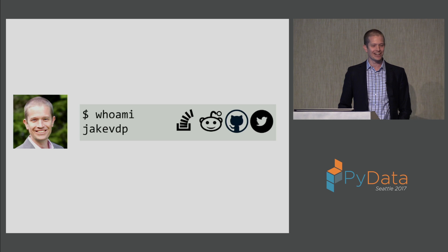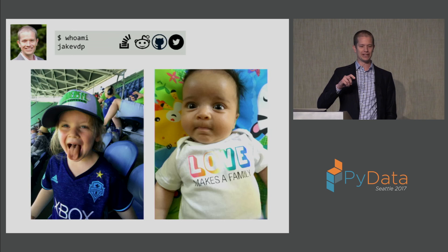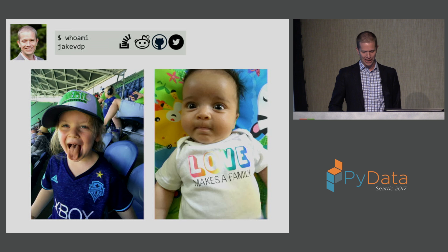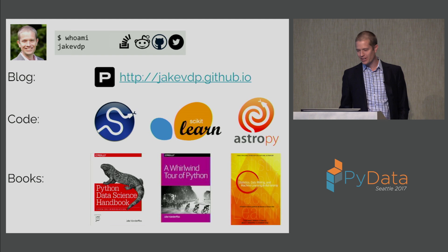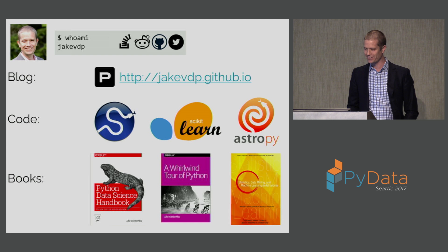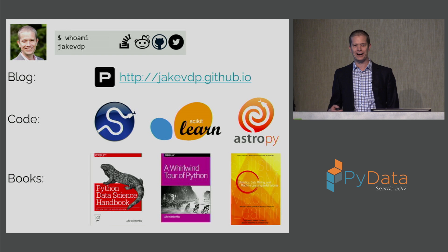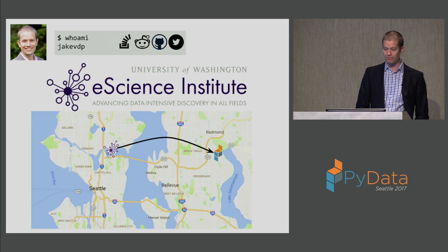A little bit about me: I'm Jake VDP — you can find me most places on the internet under that handle. The most important thing to know about me is these little weenies right here. They've recently replaced Python as my favorite thing to talk about, so feel free to ask questions. In the Python world I do a number of things: I have this blog that's being updated much more rarely these days, I've contributed to SciPy, Scikit-Learn, AstroPy, and other packages, and I have a few books on Python, statistics, astronomy, and astrophysics.